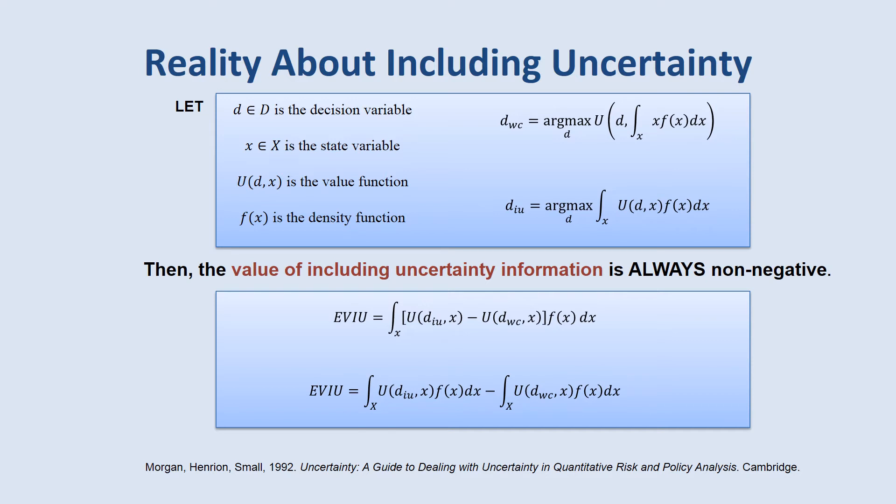This is an example of a really simple proof, mainly just for illustration. It's from Granger Morgan and Max Henrion's book about using uncertainty in quantitative risk analysis and policy. They basically show that any time we include uncertainty information in a decision-making process, it always improves the decisions and has a positive impact.